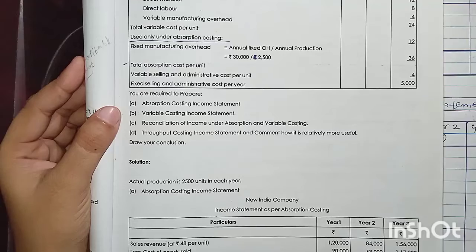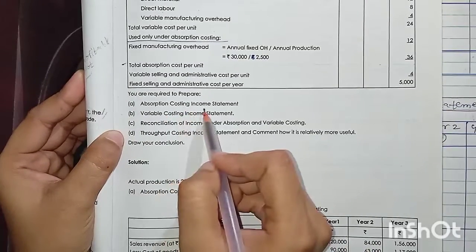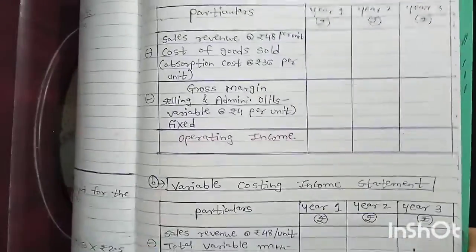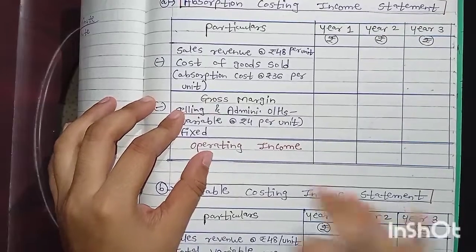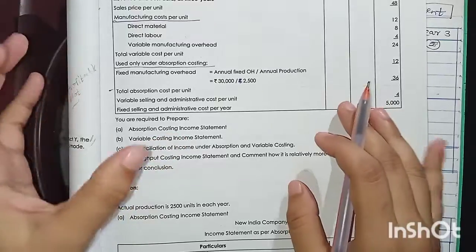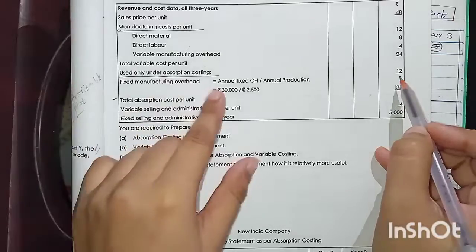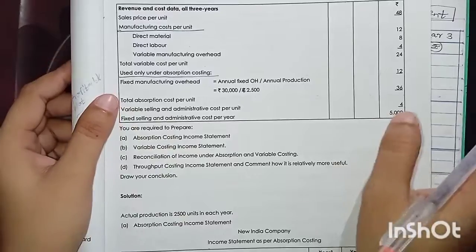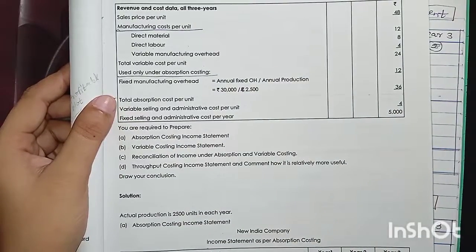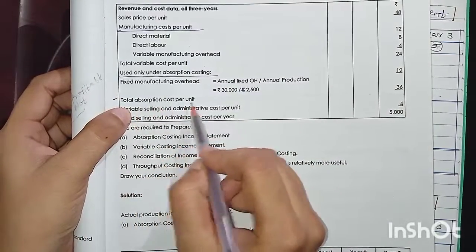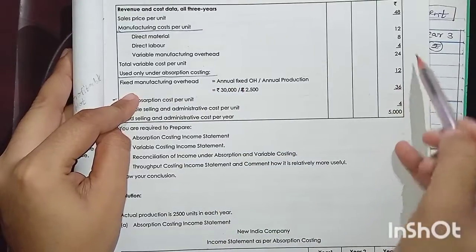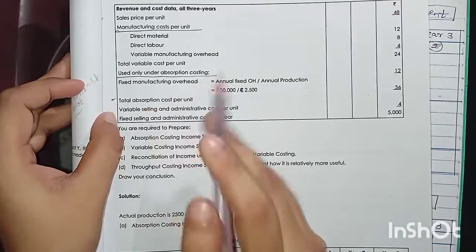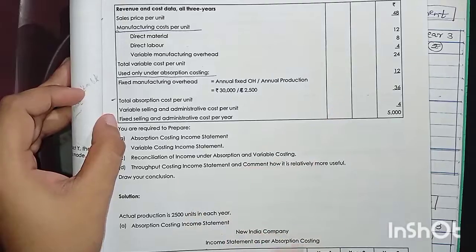So basically we have to prepare four income statements. First we go for the absorption costing income statement. The total absorption cost per unit is given as ₹36, which we can directly use. This is given ready-made in the question, so we use ₹36 for the absorption costing statement.